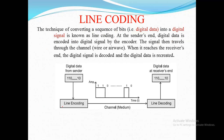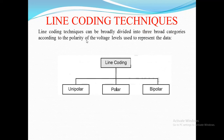Line coding is the technique used for converting digital data from the sender into a digital signal through line encoding. This signal is then transmitted over some communication medium, and at the receiver end, corresponding line decoding takes place, which decodes the signal back into the original information sent by the sender. The techniques of line coding include unipolar, polar, and bipolar.